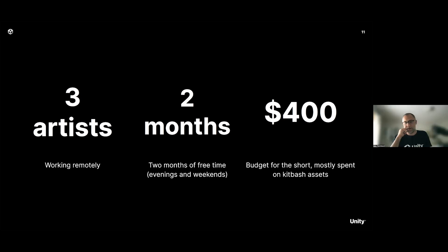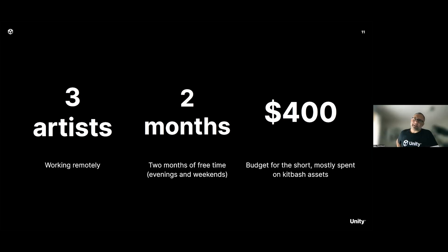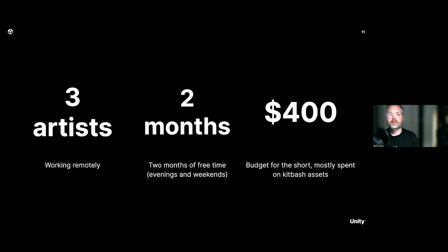The asset budget was about $400, mostly spent on the Unity Asset Store. Nate used KitBash, a company that makes really nice high-end models for cities — buildings, cars, and general set decoration. That's stuff you could model yourself, but for time reasons and given that those assets can be reused on future projects, it felt like a worthy investment.